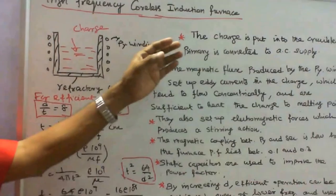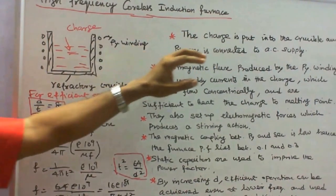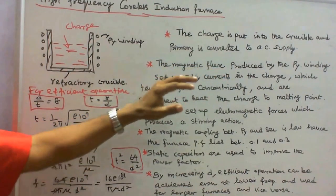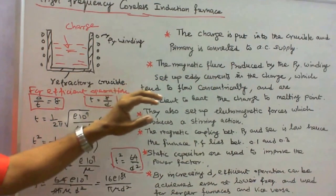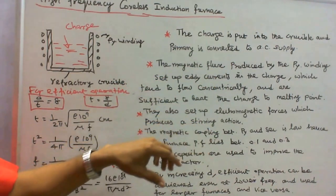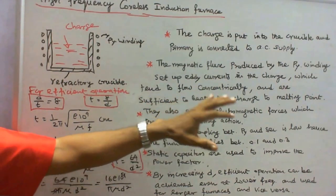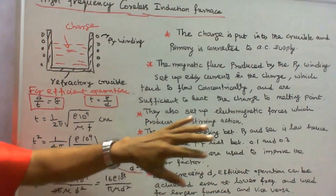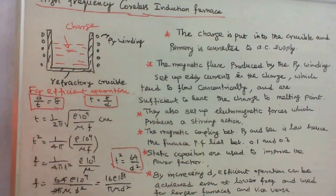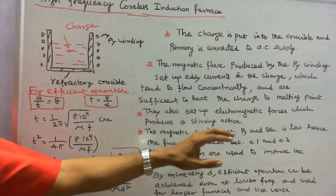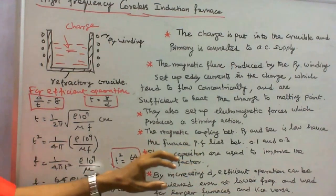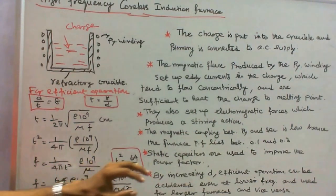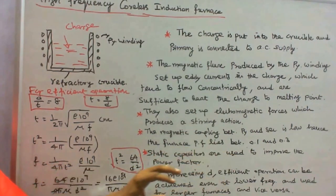The charge is put into the crucible and the primary is connected to AC supply. The magnetic flux produced by the primary winding sets up eddy currents in the charge, which tend to flow concentrically and are sufficient to heat the charge to melting point. They also set up electromagnetic forces which produce a stirring action. The magnetic coupling between primary and secondary winding is low, and hence the furnace power factor lies between 0.1 and 0.3.